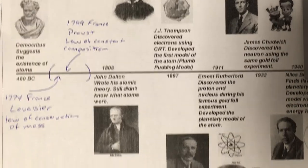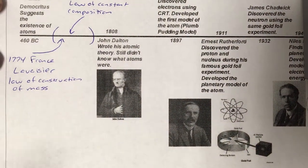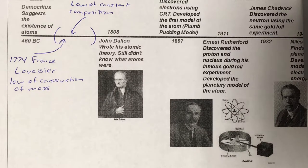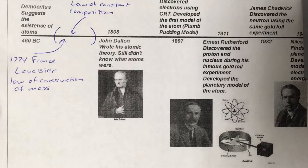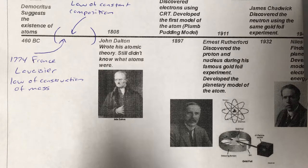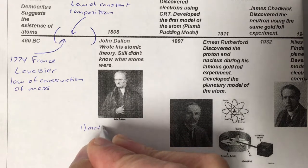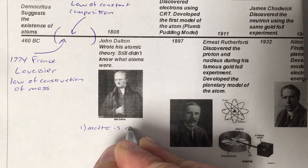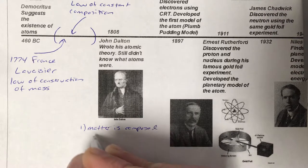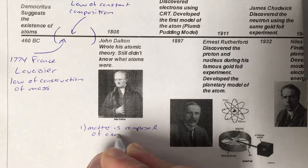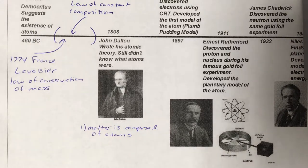It picks up with Dalton in 1808. He creates the first atomic theory. He doesn't know what atoms are — that's the interesting part — but he takes all the ideas that came before him and puts them together into four major points. First: all matter is composed of tiny particles called atoms. That's basically Democritus' idea.